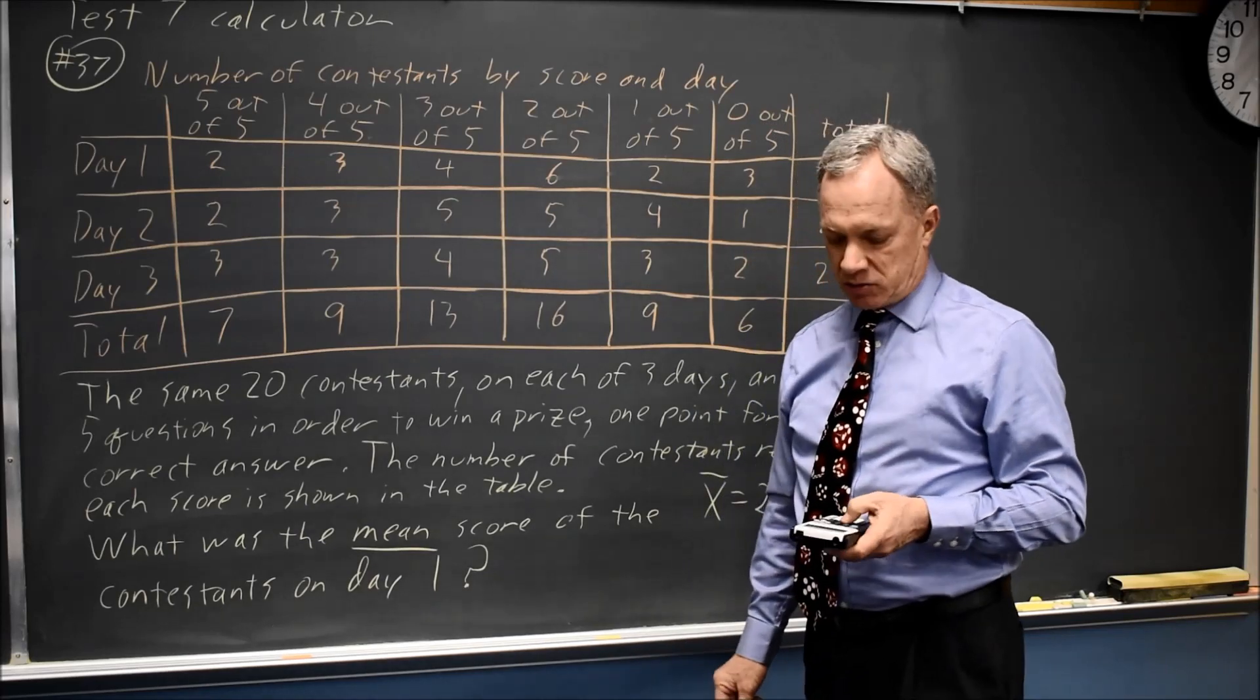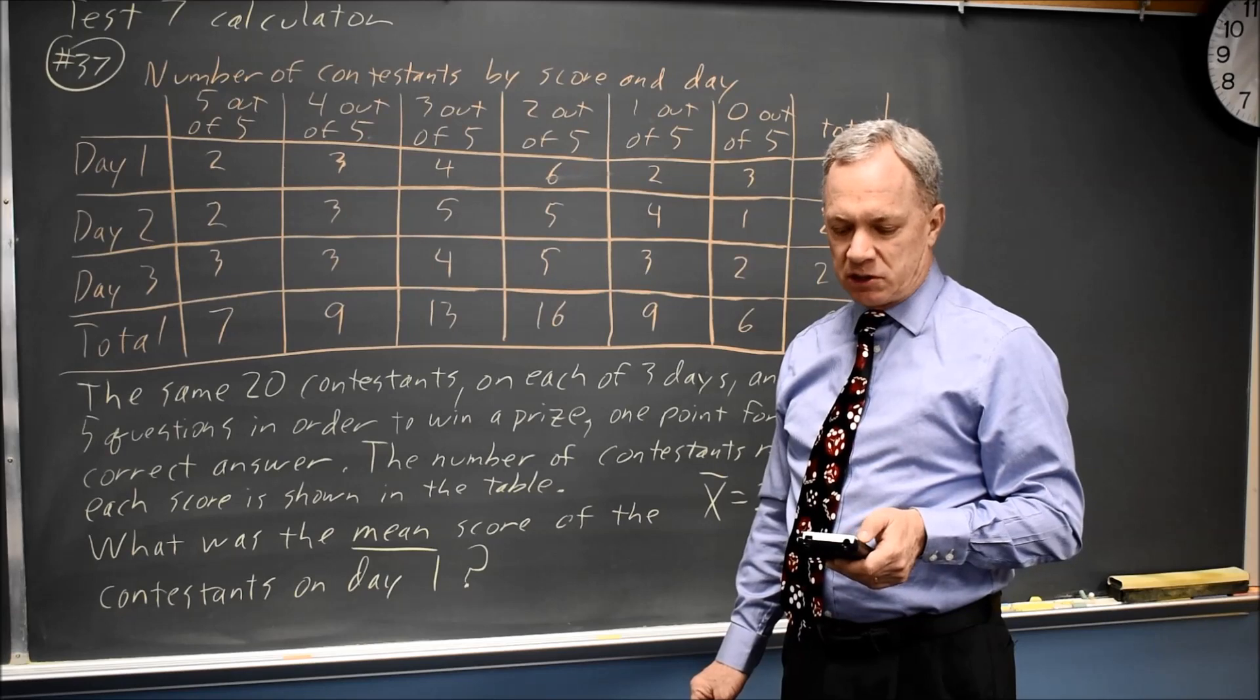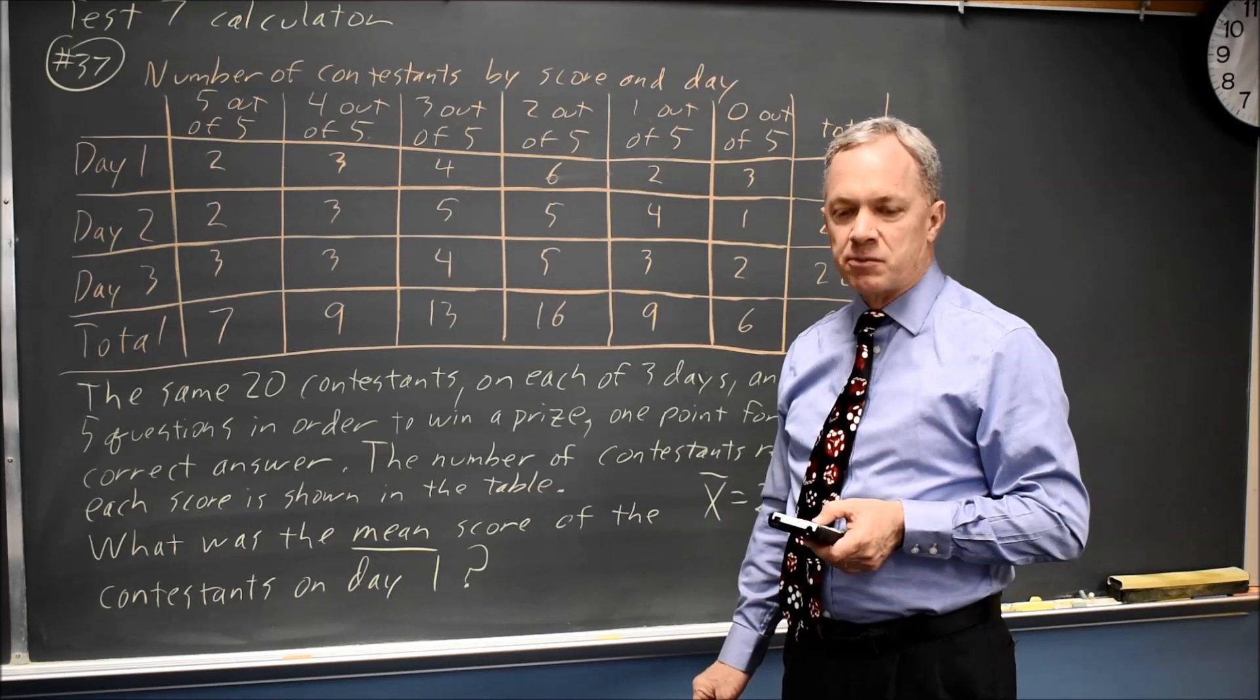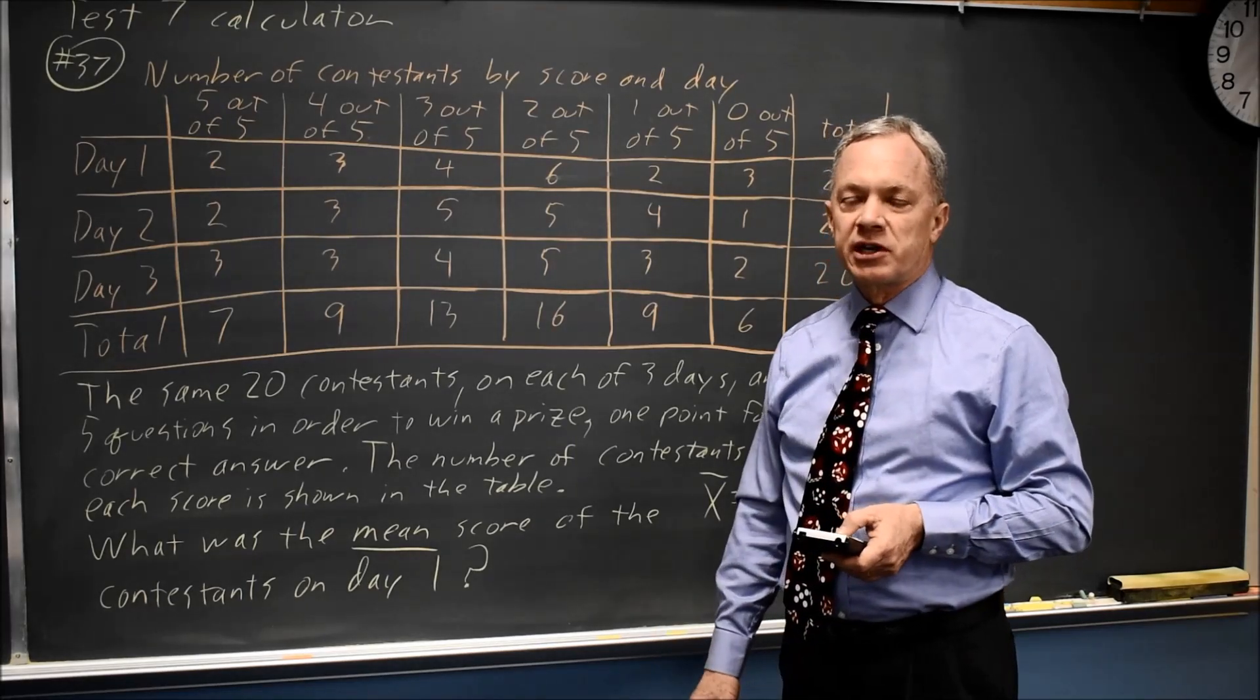If I wanted the median, I could scroll down near the bottom of the list to the minimum, first quartile, median, third quartile, and maximum. The median is 2, but I want the mean 2.4, so that is what I would grid in.